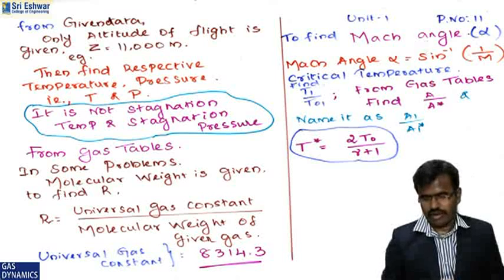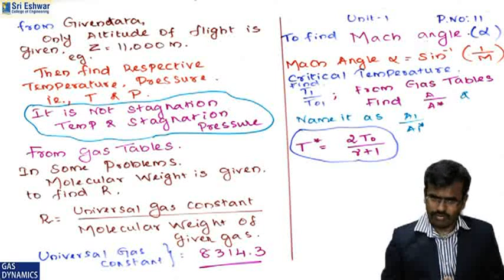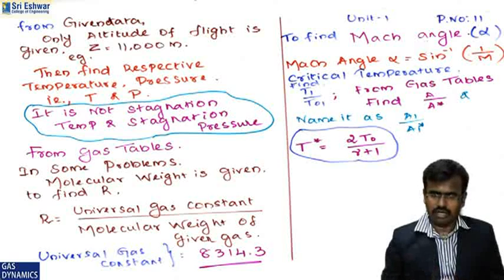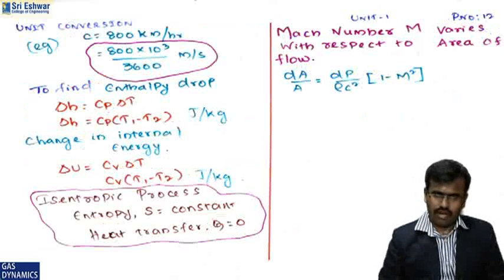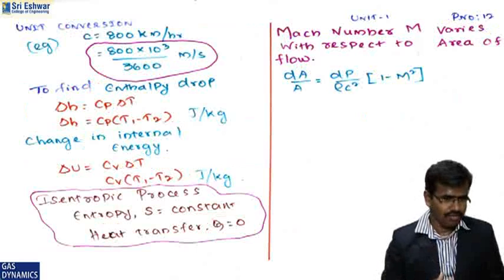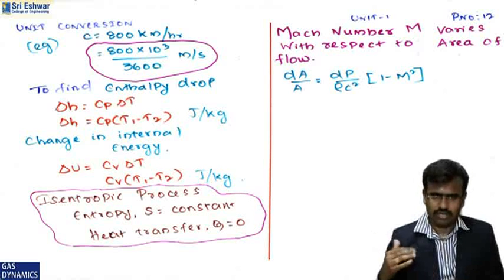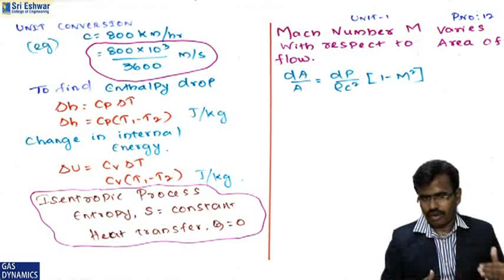The Mach angle α is given by α = sin⁻¹(1/M). Critical temperature T* is given by T* = 2T₀/(γ+1). For unit conversion of speed: c = 800 km/h → multiply by 1000 and divide by 3600 to get m/s. Enthalpy drop Δh = cₚ·ΔT = cₚ·(T₁−T₂) in J/kg.